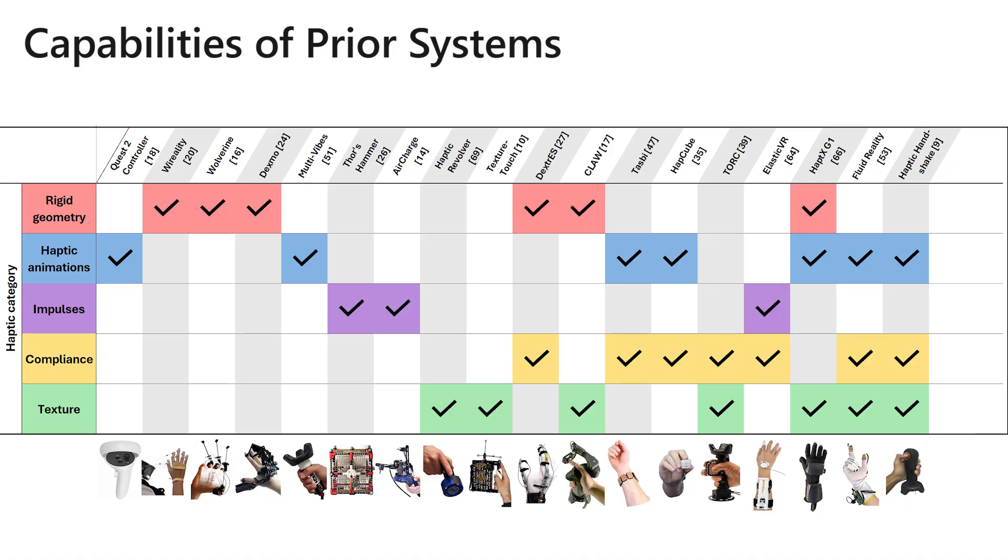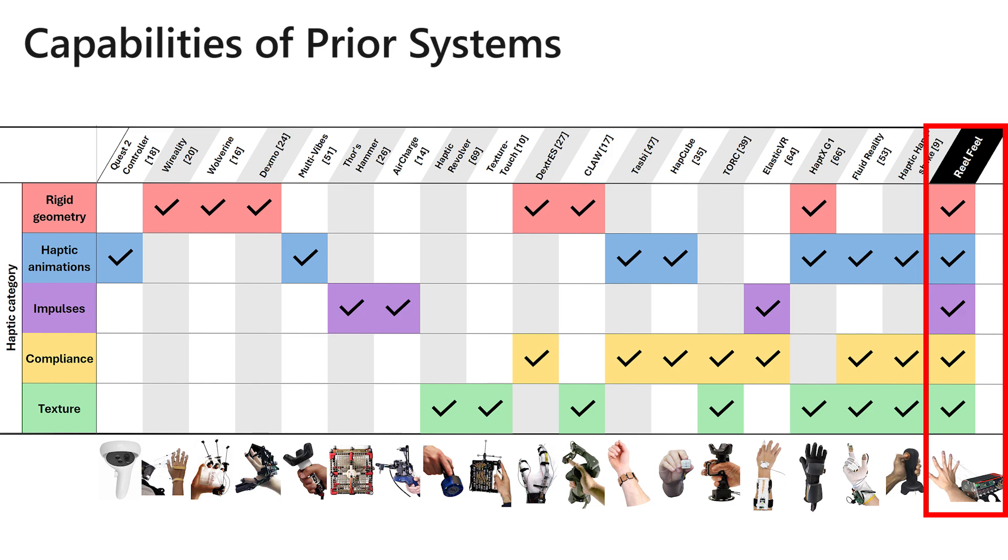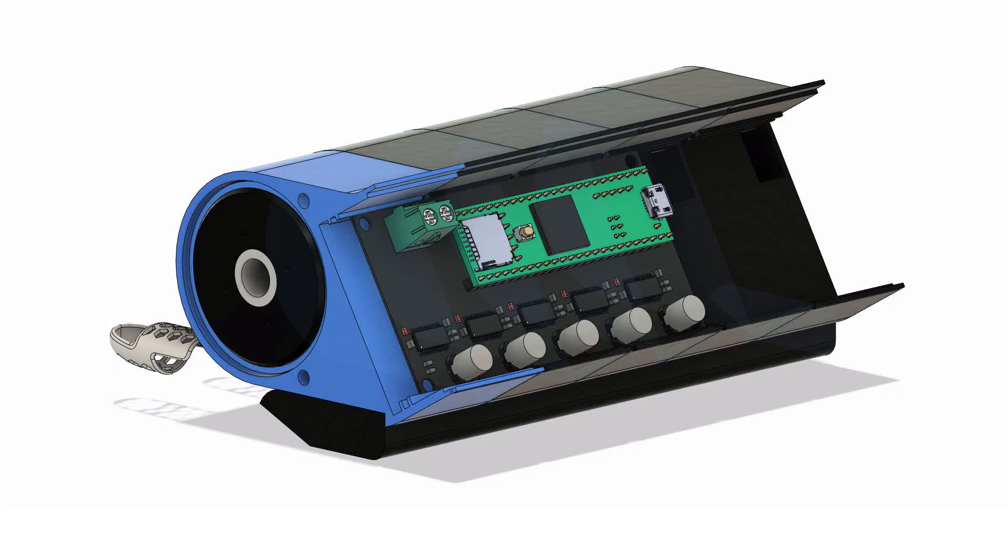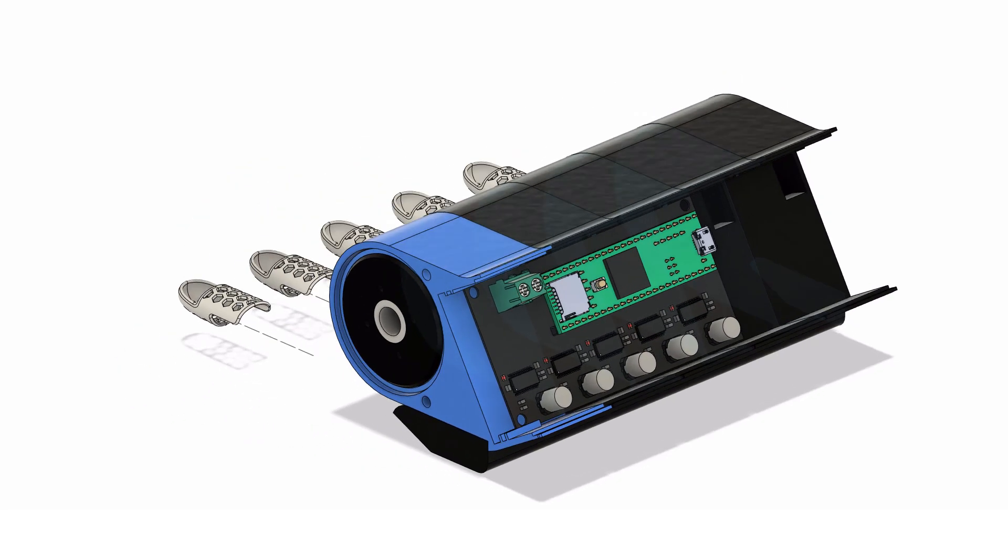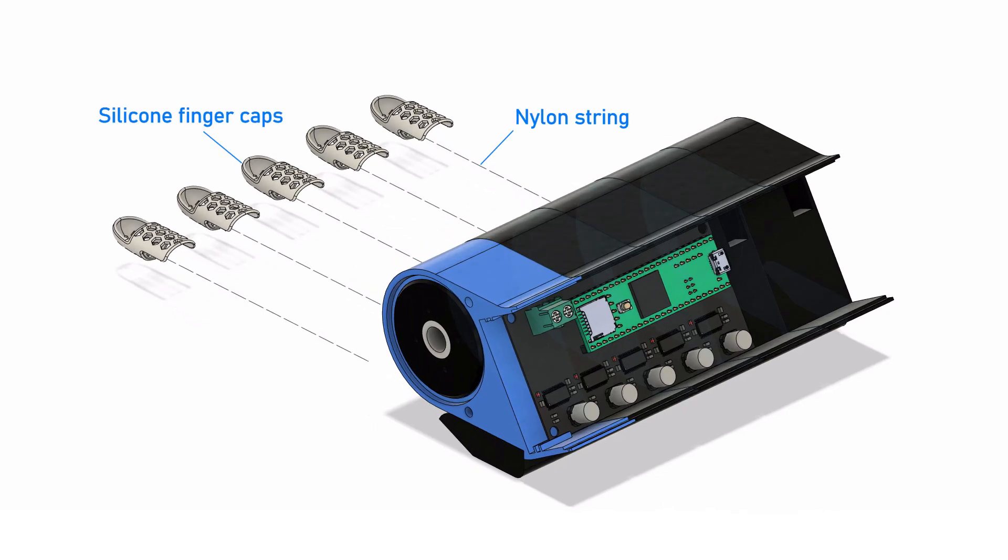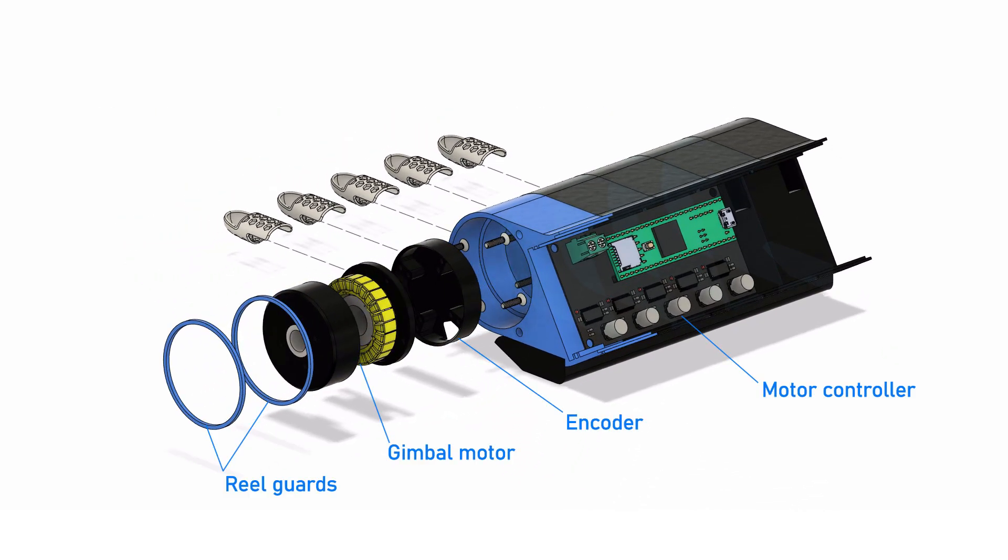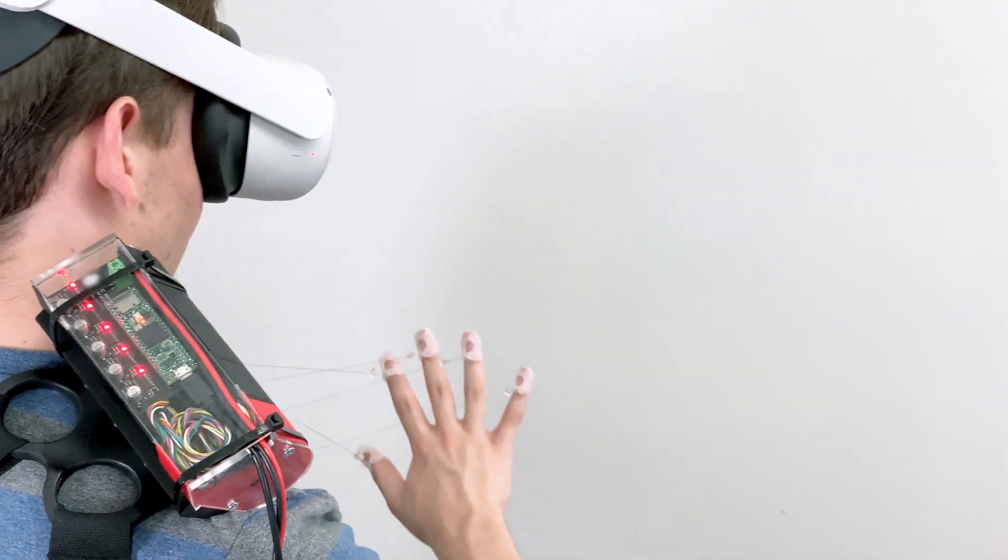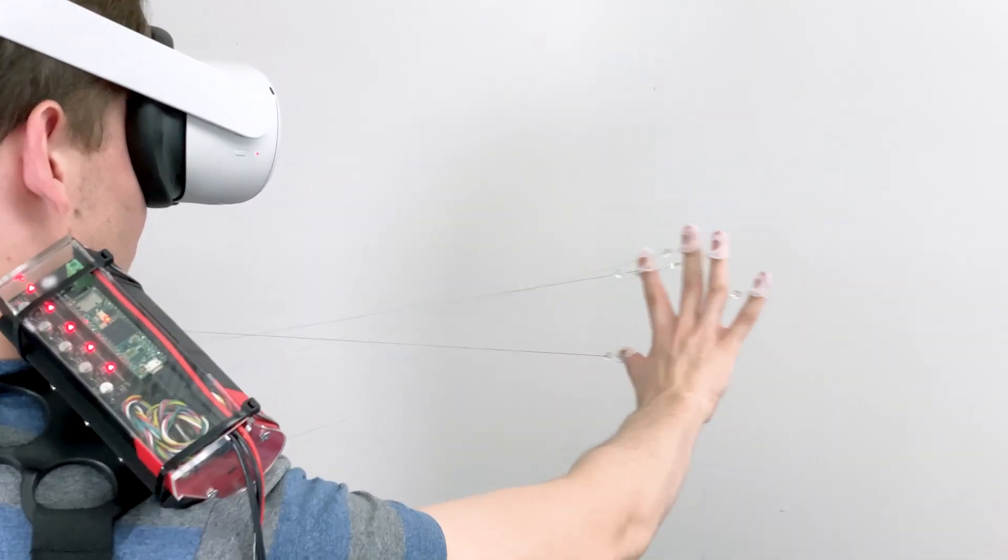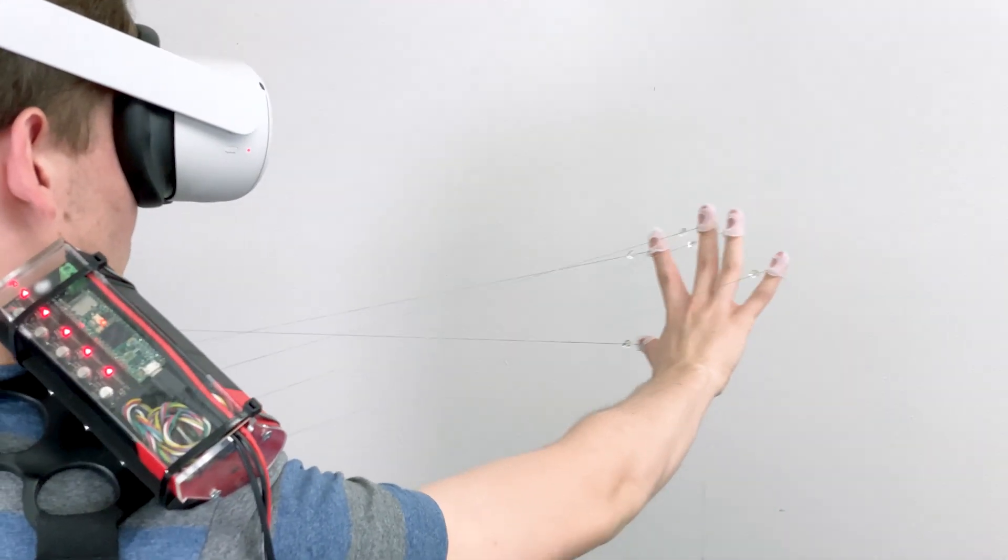RealFeel, however, can render these five different haptic categories in a single device. Our system utilizes gimbal motor reels, with strings running to each fingertip. The brushless DC motors we use have a high peak torque, and when we utilize closed loop PID control, we get smooth and fine grained motion. These qualities are critical for both arresting a user's hand in space, while also creating more subtle effects, such as textures.